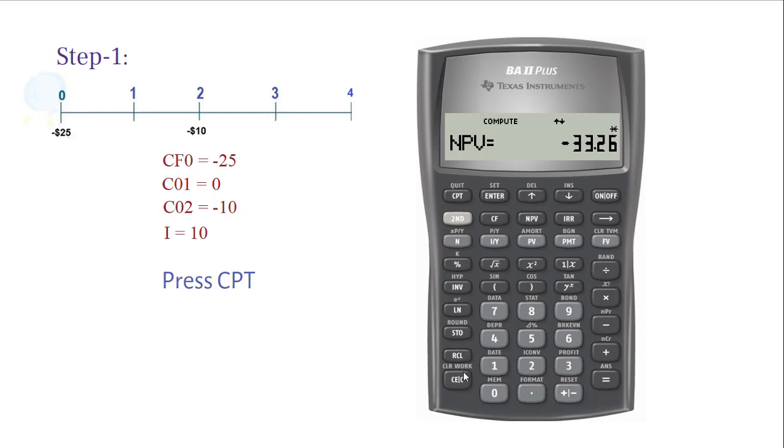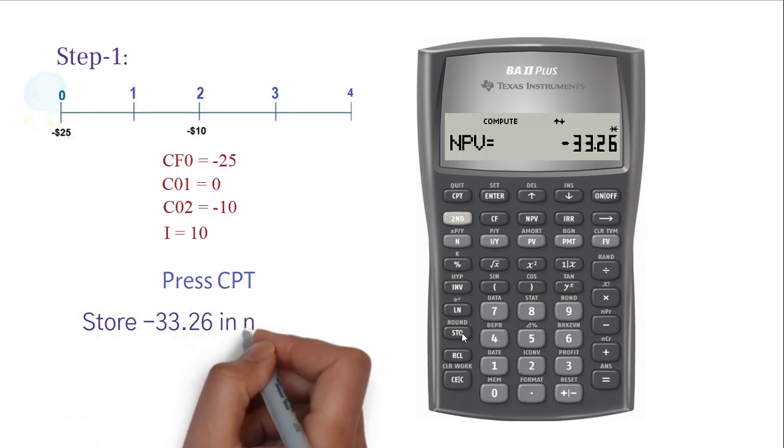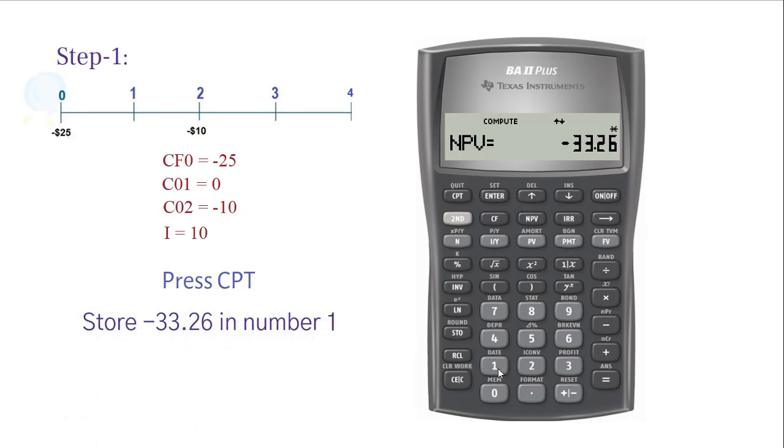So, negative 33.26 is the present value of all negative cash flows. Save this number by pressing STO or store and 1.